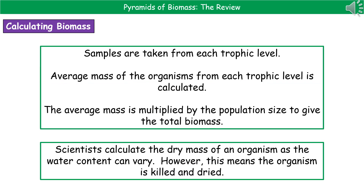To be able to draw a Pyramid of Biomass, we need to know what the biomass is. To do this, the first thing we've got to do is take samples from each trophic level. We then work out the average mass of the organisms from each trophic level, and multiply that by the population size. That gives us our total biomass to use to draw our pyramid.